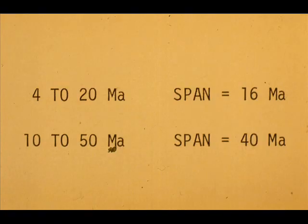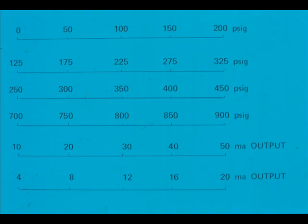So far we have primarily discussed the 4 to 20 milliamp transmitter, where the output span is 16 milliamps. For the 10 to 50 milliamp output range, the output span is 40 milliamps. We can compare the 10 to 50 output formula to the 4 to 20 milliamp one.